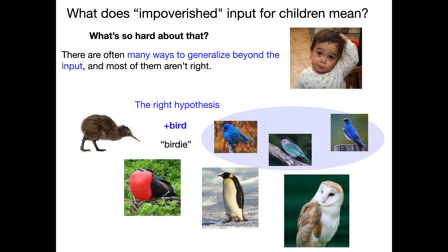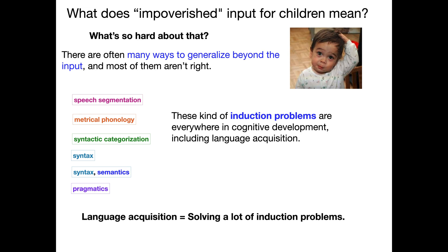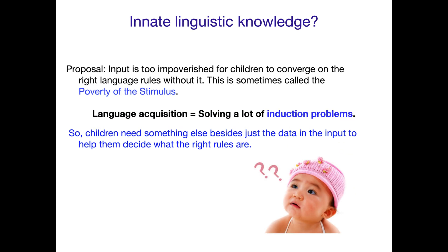The right hypothesis is whatever cluster of concepts goes together to make all of these things recognizable as birdies and those other things not. That's what we mean by there are many ways to generalize beyond the input, and usually only one of them is right, and it's often not an easy or obvious one. This is called an induction problem — where there's not enough input on its own to specify what the right rules are. These kinds of induction problems are everywhere in cognitive development, including language acquisition, which is really about solving a lot of these induction problems caused by poverty of the stimulus.